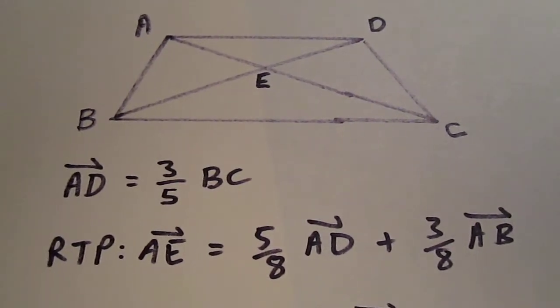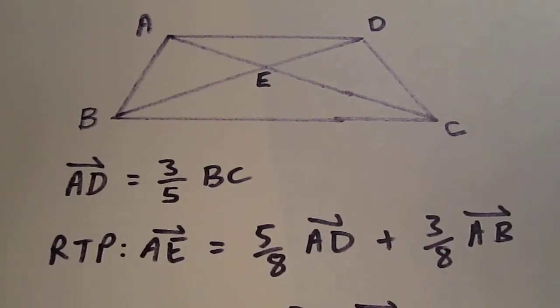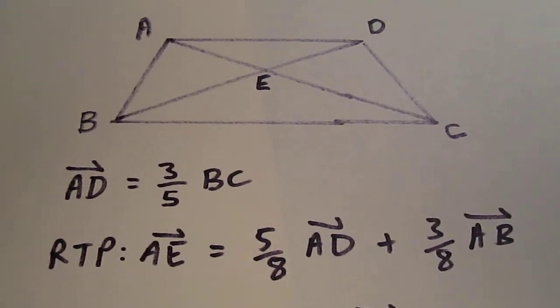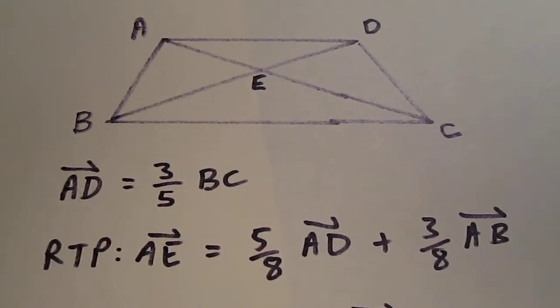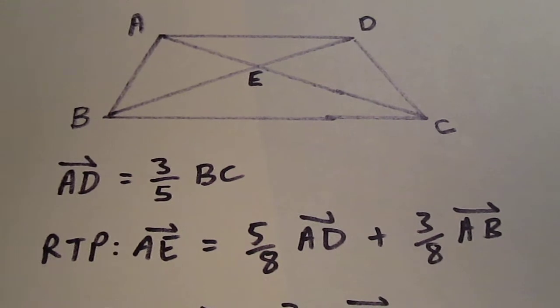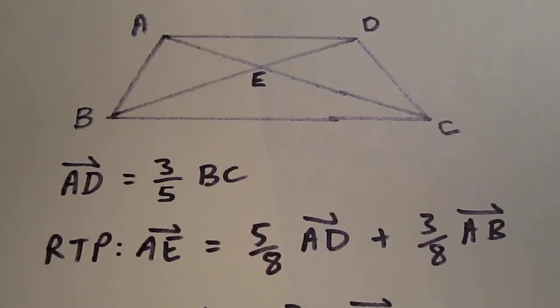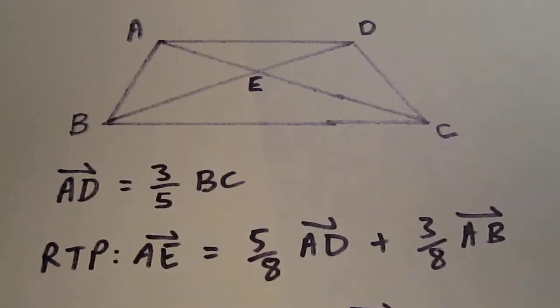We're given this trapezoid and we're told that AD equals 3 fifths of BC. We're then asked to show that AE is 5 eighths of AD plus 3 eighths of AB.